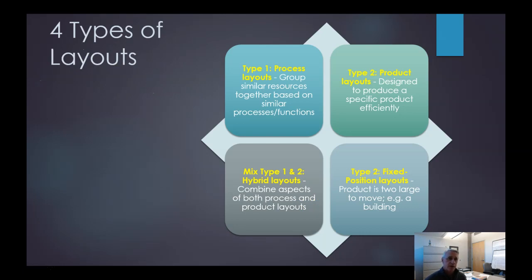In general we have four layouts to talk about. Type one is process layout, where we group similar resources together that do similar functions. Type two is product layout, designed to produce a specific product very efficiently. Then there are mixed systems — hybrids — where we combine aspects of both process and product layouts when you need the best of both worlds. Finally, there's the fixed position layout, a subset where a product is too large to move.